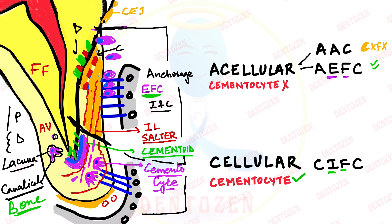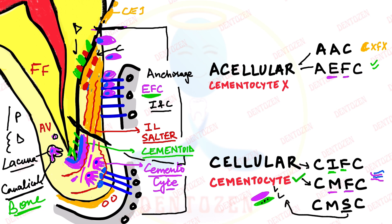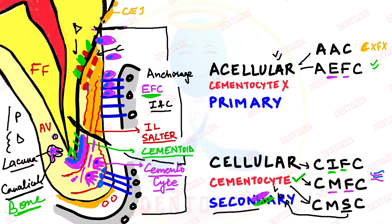A part of acellular cementum can also extend upward onto the enamel surface near the cemento-enamel junction. This acellular cementum has no fibers either, so it is called acellular afibrillar cementum — no cells and no fibers. So there are two types of acellular cementum. In cellular cementum, mainly intrinsic fibers are present, but extrinsic PDL fibers can also mix in, giving cellular mixed fiber cementum. When layers of acellular and cellular cementum alternate, it is called cellular mixed stratified cementum. Acellular cementum, forming first, is called primary cementum; cellular cementum, forming later, is secondary cementum.